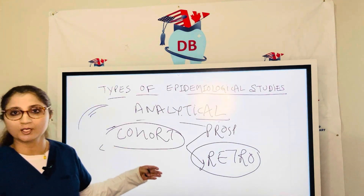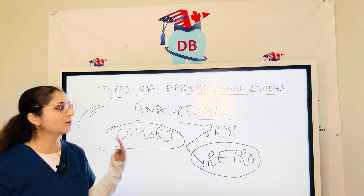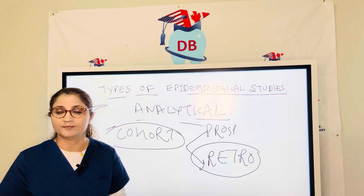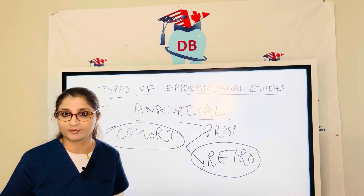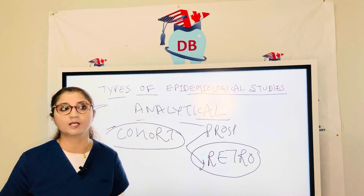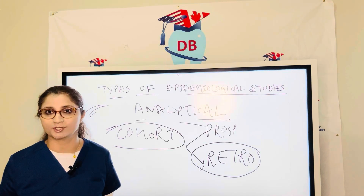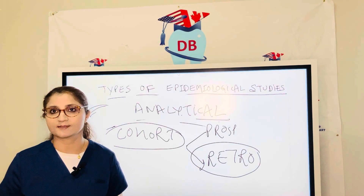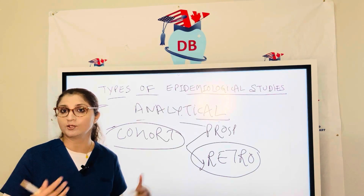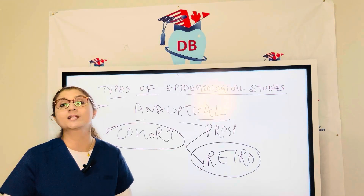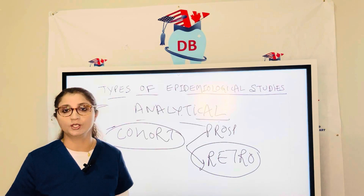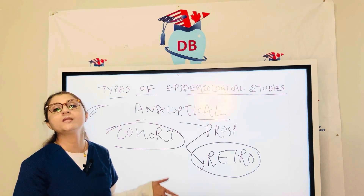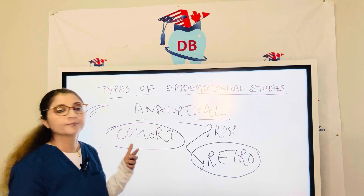Comparing cohorts with cross-sectional: a key limitation of cross-sectional is it cannot determine causality. It cannot tell you the cause of the disease because cross-sectional is only about today — we are not going into the past or the future. We are only looking at today: smoker or non-smoker, cancer or no cancer. We cannot determine how long they were smoking or other contributing factors. But in the case of cohort, we are trying to establish a relationship between the exposure and the disease.